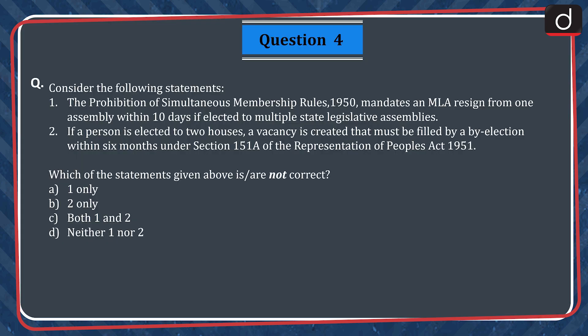Consider the following statements. 1. The Prohibition of Simultaneous Membership Rules 1950 mandates an MLA resign from one Assembly within 10 days if elected to multiple State Legislative Assemblies. 2. If a person is elected to two houses, a vacancy is created that must be filled by a by-election within six months under Section 151A of the Representation of People's Act 1951. Which of the statements given above is not correct? A. One only. B. Two only. C. Both one and two. D. Neither one nor two.